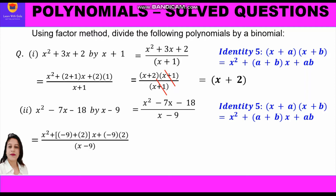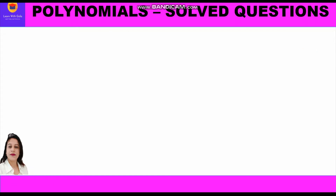We substitute these values in the identity and write in the numerator: x² + (−9+2)x + (−9×2) upon (x−9). We get two factors: (x−9)(x+2) upon (x−9). Now (x−9) cancels, and we are left with the answer x plus 2.